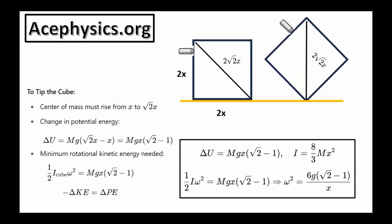In order for the cube to tip over after the bullet hits it, it must have enough kinetic energy to rotate up to the tipping point — otherwise the cube won't tip over onto its opposite face. The cube has side lengths of 2x. Using the Pythagorean theorem, I can calculate the length of the diagonal: 2 times root 2 times x.